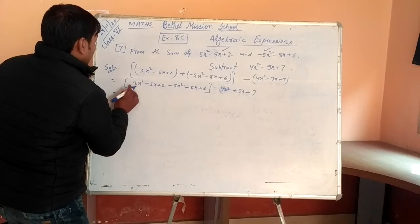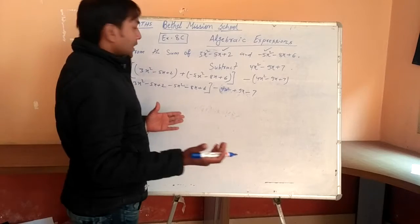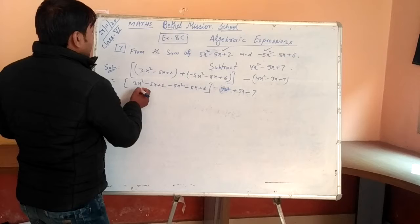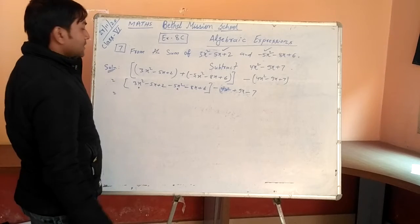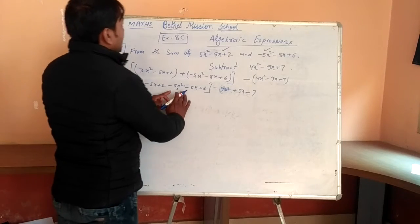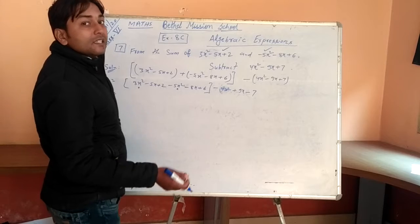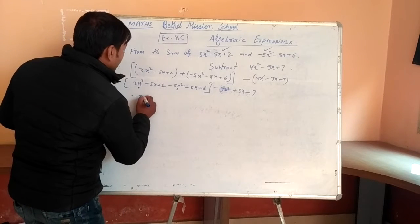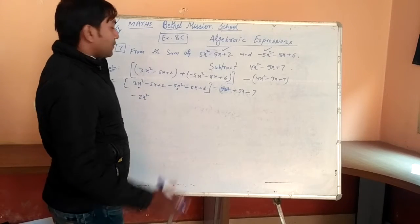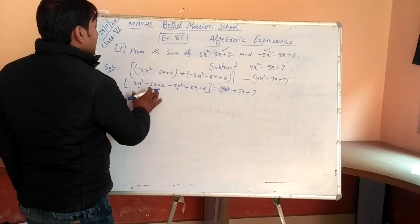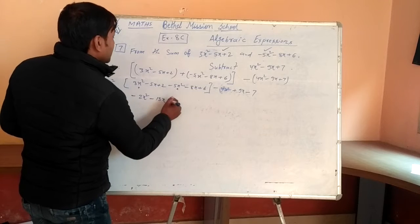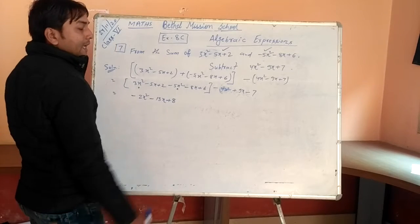Here, under the bracket given, you have to add or subtract the like terms. What are the like terms? 3X squared, X squared, X squared — these are like terms. X and X are like terms. So, 3X squared minus 5X squared, that is minus 2X squared. And 5X minus 8X: minus minus plus, first we have to add 8 and 5, which is 13, so minus 13X. And 2 plus 6 plus 8.